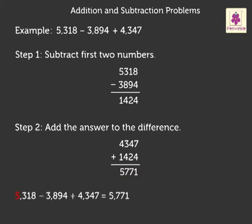Hence, 5,318 minus 3,894 plus 4,347 is equal to 5,771.